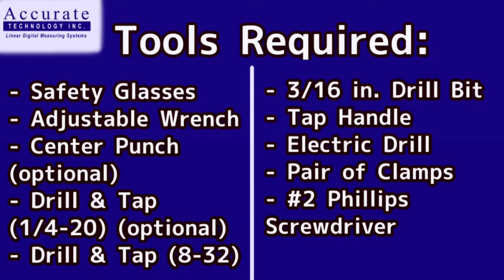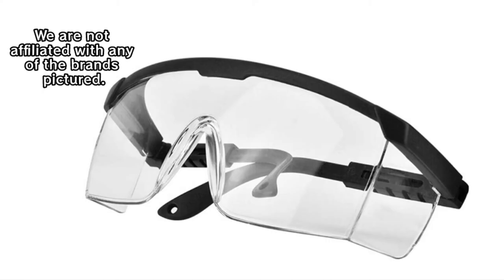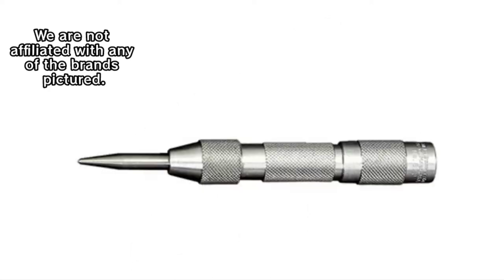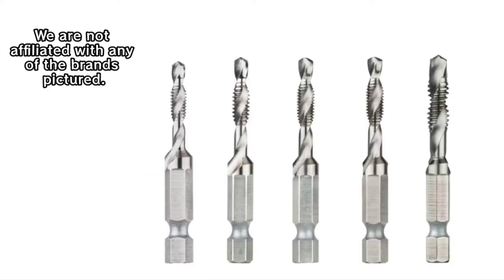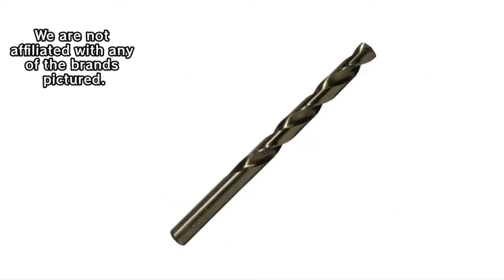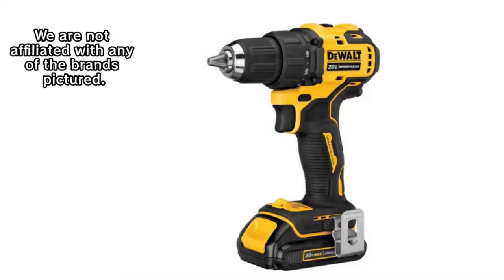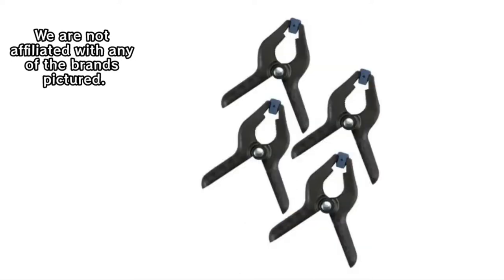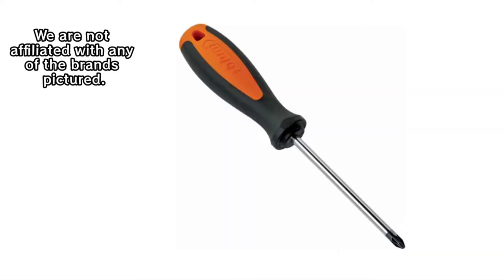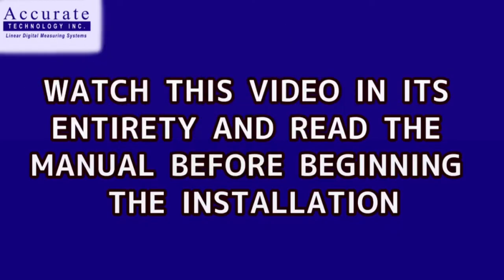The tools required for this installation are: Safety glasses, an adjustable wrench, an optional center punch, a drill and tap for a ¼-20 threaded bolt which is optional, a drill and tap for 8-32 screws which are included in this kit, plus tapping fluid, a 3/16 inch drill bit, a tap handle, an electric drill (we recommend cordless), a pair of small clamps that open to 4 inches, and a number 2 Phillips screwdriver. Please watch this video in its entirety and read all of the instructions in your manual before beginning the installation.